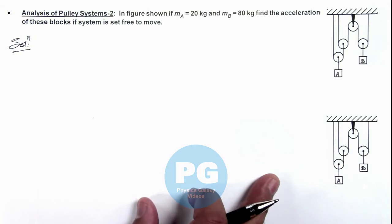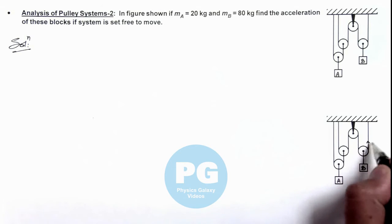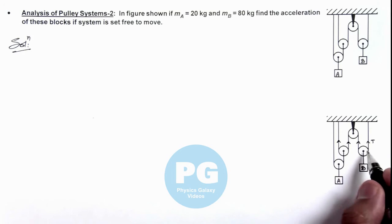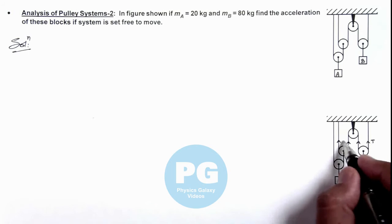Here if I consider tension in this string to be T, then as the string and pulleys are considered to be light and smooth, the tension in the whole string can be taken as T.